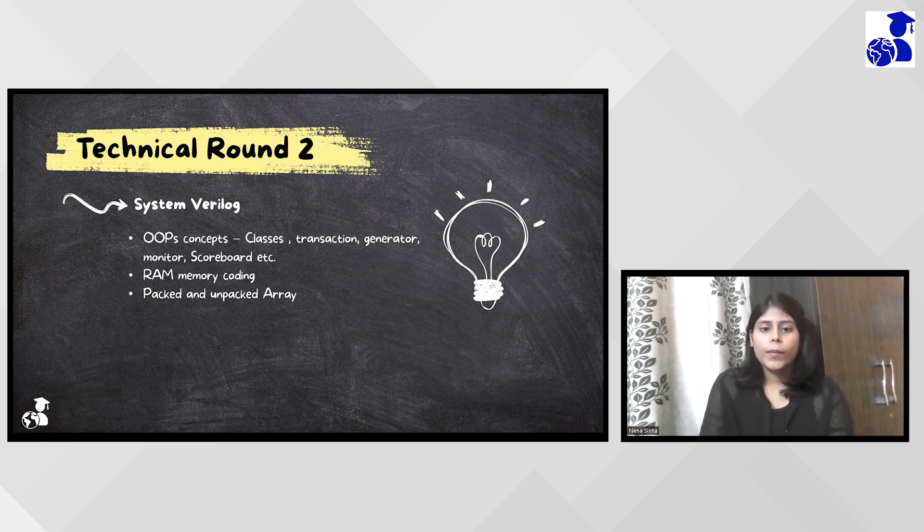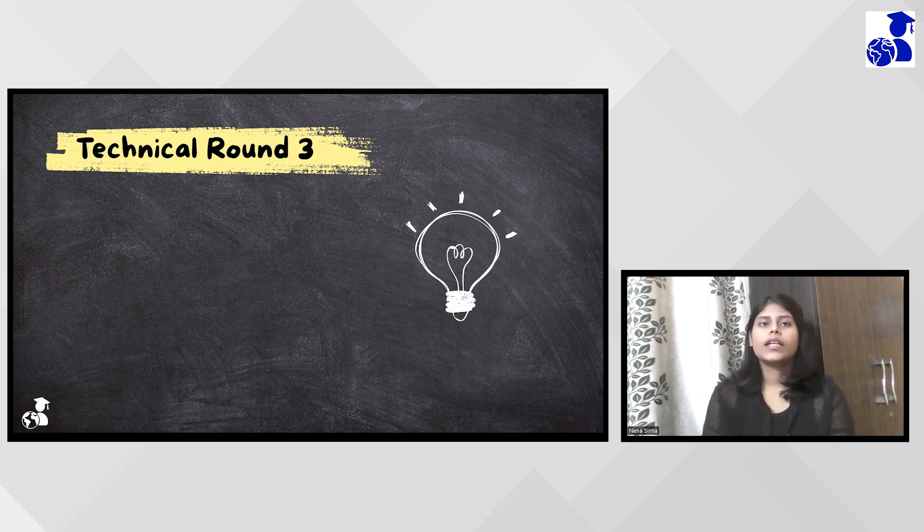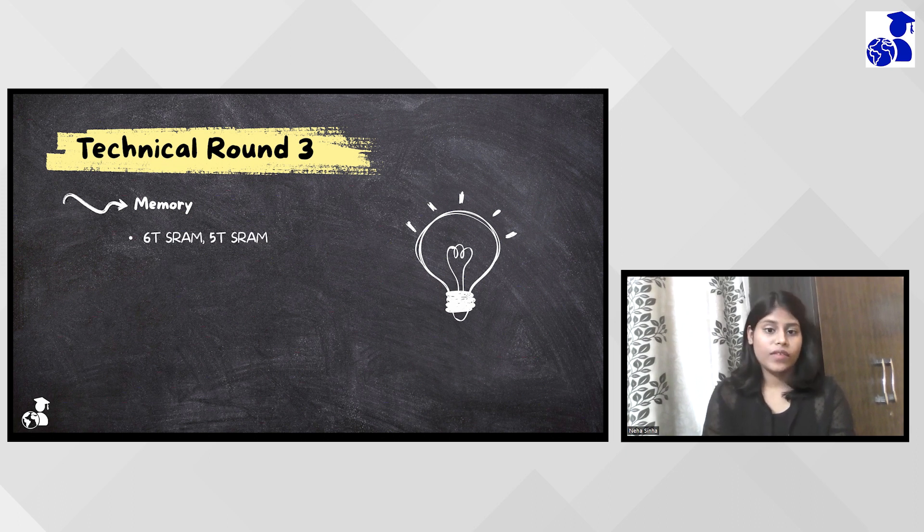And then my third round happened. It happened offline. In this round, they asked me about the memory thing. They asked me about SRAM. They asked me the difference between 6T SRAM and 5T SRAM. And what is the 5T is having that is better than 6T. So I explained about its area, delay and power has been reduced compared to 6T.